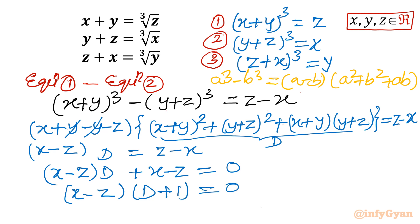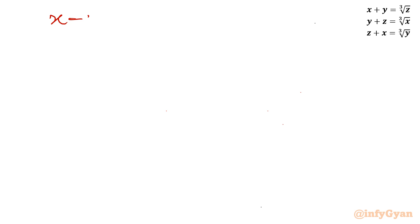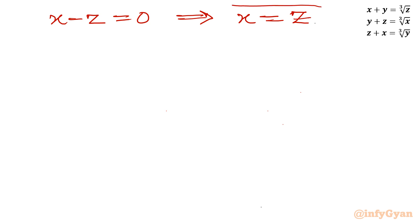So I write (x minus z)(d + 1) = 0. Since a·b = 0, the conclusion is: either x minus z = 0, or d + 1 = 0. Considering x minus z = 0, the conclusion is x = z. This is a very important result which we will use.